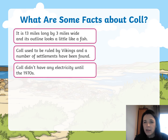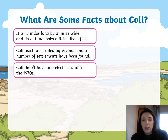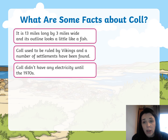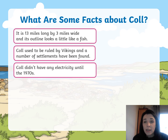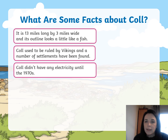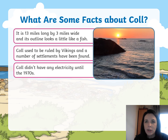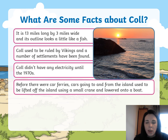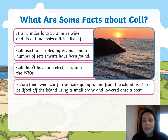Coll didn't have any electricity until the 1970s — only about 50 years ago — even though lots of other parts of the country had electricity by then. I wonder what they used to keep their houses warm and what they used for light. Before there were car ferries, cars going to and from the island used to be lifted off using a small crane and lowered onto a boat. That seems quite a palaver.